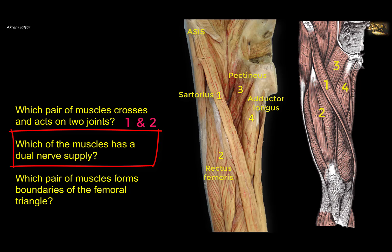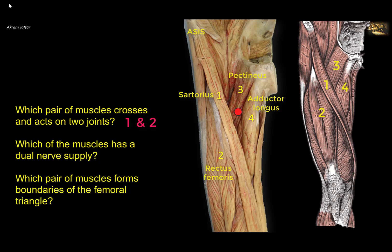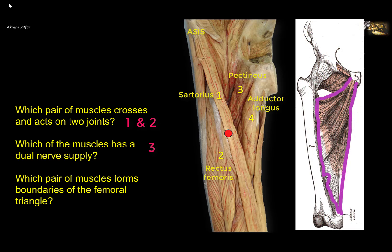Which of the muscles has a dual nerve supply? Rectus femoris is supplied by the femoral nerve, as is the sartorius. Adductor longus is supplied by the obturator nerve. It's only the pectineus that sometimes receives a dual nerve supply — sometimes considered part of the anterior compartment and supplied by the femoral nerve, and sometimes considered part of the adductor compartment and supplied by the obturator nerve. There is another muscle in the back of the thigh with dual nerve supply: the adductor magnus, which has a hamstring portion supplied by the sciatic nerve and an adductor portion supplied by the obturator nerve.